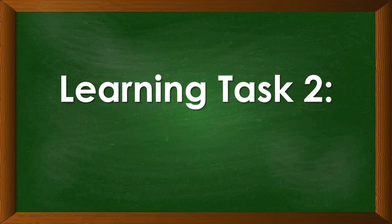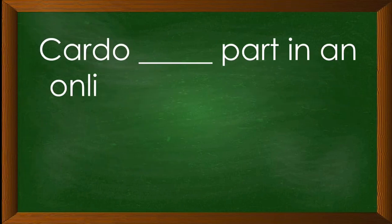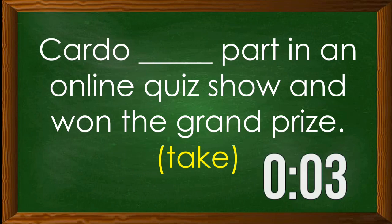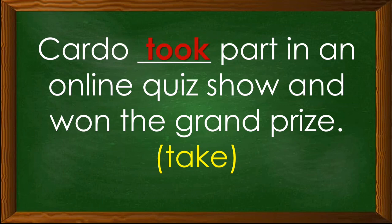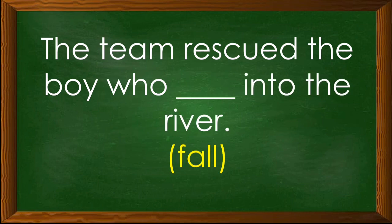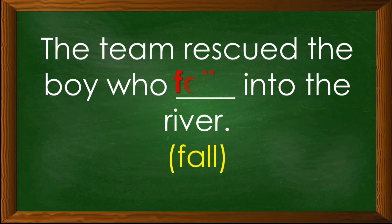Let us have learning task number 2. Complete each sentence by writing the correct form of the verb in the parentheses. Number 1: Carlo blank part in an online quiz show and won the grand prize. The base form of the verb is take. The correct answer is took. Number 2: The team rescued the boy who blank into the river. The verb is fall. The correct answer is fell.